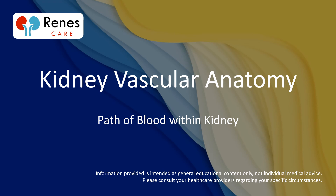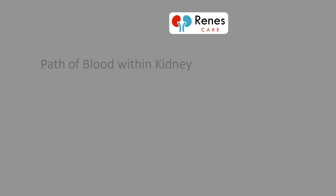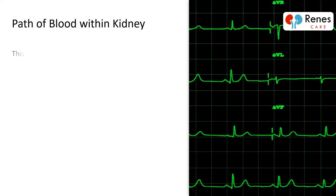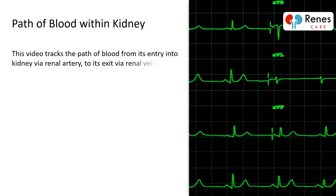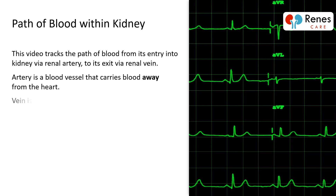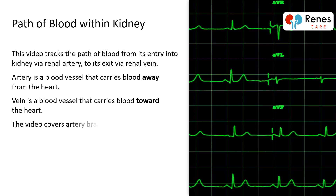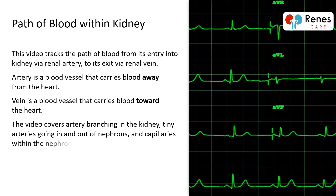Kidney vascular anatomy: path of blood within the kidney. This video tracks the path of blood from its entry into the kidney via the renal artery to its exit via the renal vein. An artery carries blood away from the heart; a vein carries blood toward the heart. The video covers artery branching in the kidney, tiny arteries going in and out of nephrons, and capillaries within the nephron, ultimately leading to the collection and exit of purified blood.